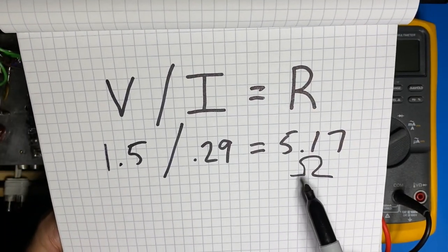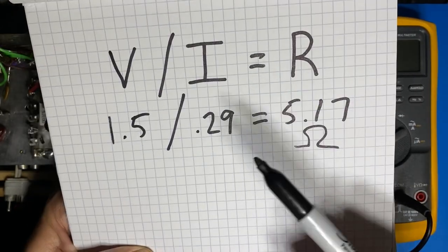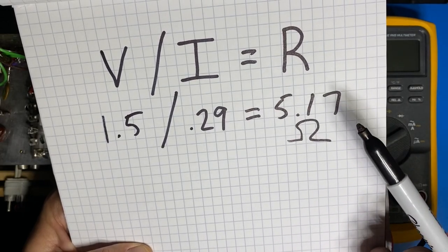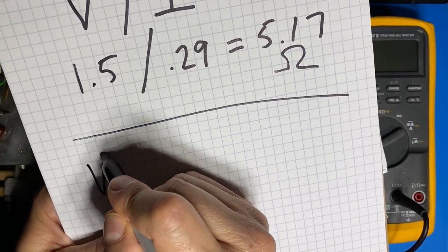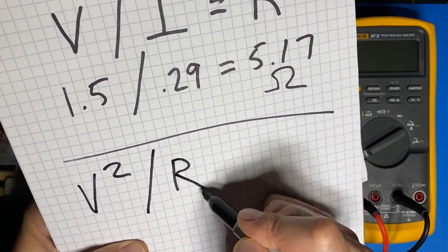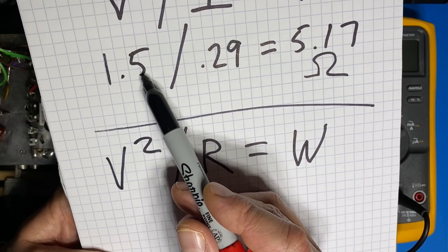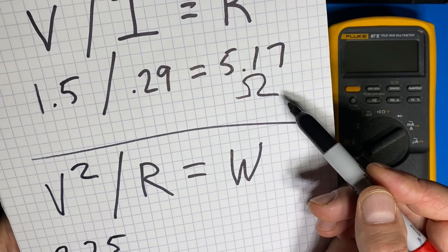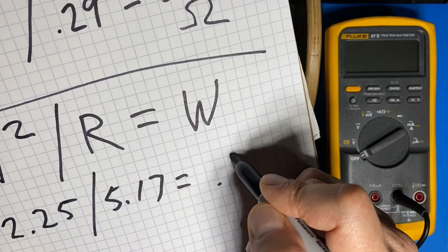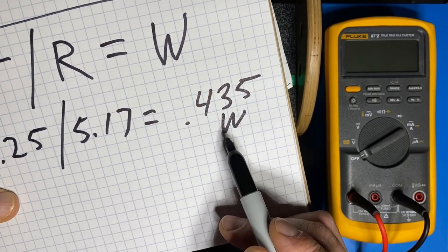Now resistors aren't just specified by resistance they're also specified by wattage. So how do we know what size wattage resistor we need? Well there's another calculation for that which says that voltage squared divided by resistance equals power in watts. Our voltage of 1.5 volts squared is 2.25 and if we divide that by our resistance of 5.17 we get 0.435 watts which tells us that we need at least a half watt resistor.